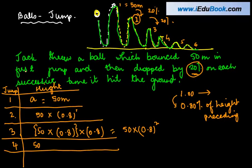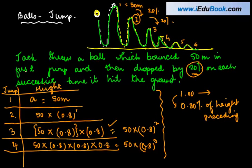In the third time, fourth time, it will jump 50 into 0.8 into 0.8, which is the height it took in the third case. And 80% of that will be 1 more time 0.8. Now if you observe something, there is an interesting pattern here. In the first jump, how much did the ball go up? It went 50 meters up.